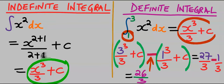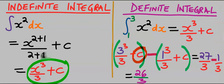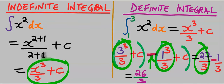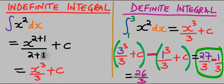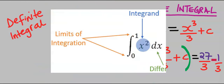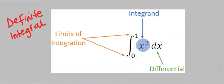Next we input the lower limit 1 after including a minus sign, substituting 1 wherever we see x. The C minus C terms cancel out, and we are left with 27 over 3 minus 1 over 3. Solving carefully, our final answer is 26 over 3. For an indefinite integral we cannot go beyond the general expression. Definite integrals always have limits of integration.